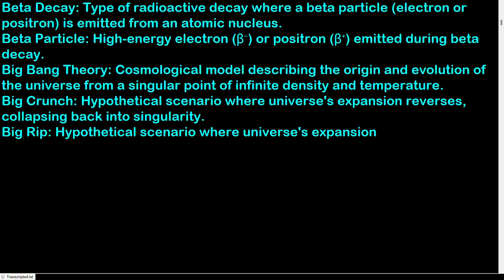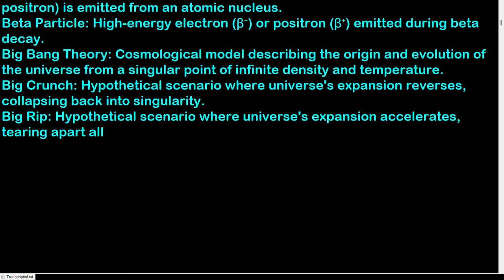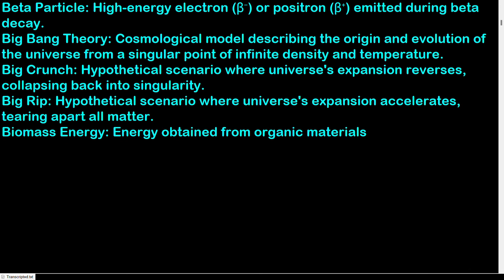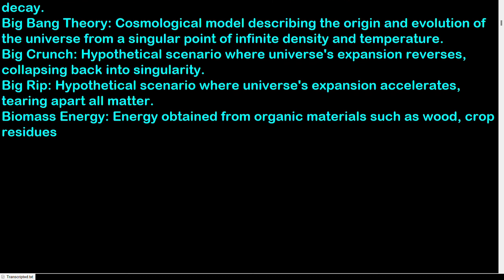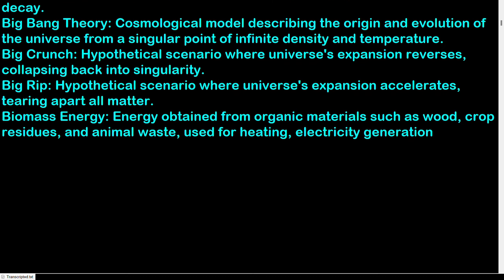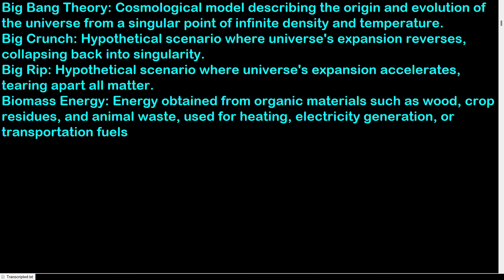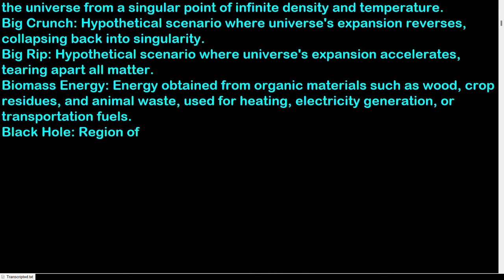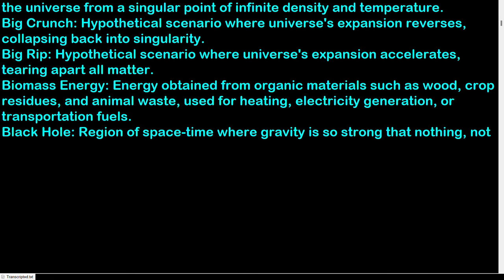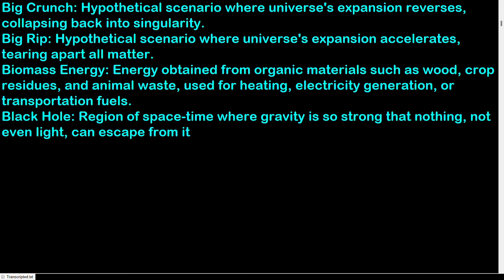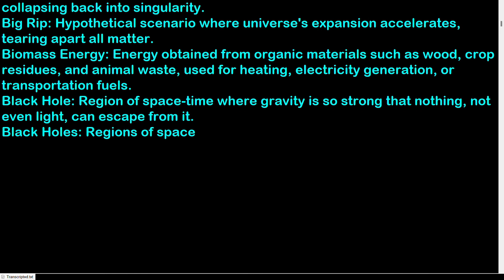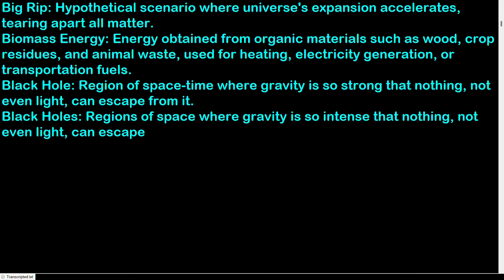Big Crunch: hypothetical scenario where the universe's expansion reverses, collapsing back into a singularity. Big Rip: hypothetical scenario where the universe's expansion accelerates, tearing apart all matter. Biomass energy: energy obtained from organic materials such as wood, crop residues, and animal waste, used for heating, electricity generation, or transportation fuels. Black hole: region of spacetime where gravity is so strong that nothing, not even light, can escape.